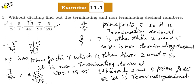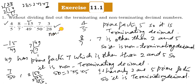Similarly, for the fraction with denominator 28: 28 = 2 × 2 × 7. Since 7 is a prime factor other than 2 and 5, it is a non-terminating decimal. You can write non-terminating here.